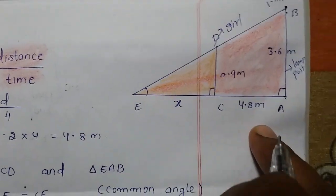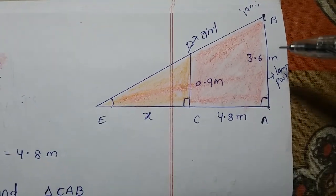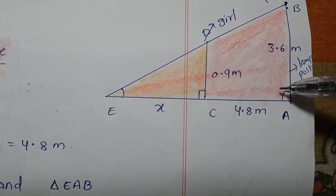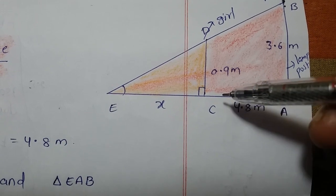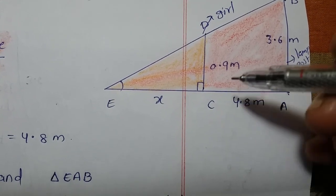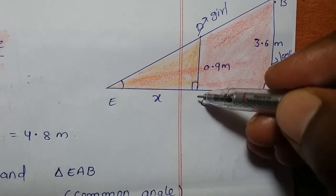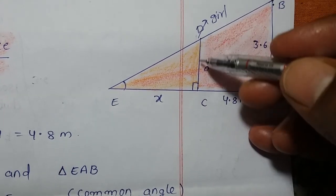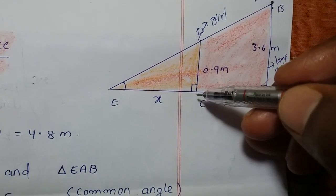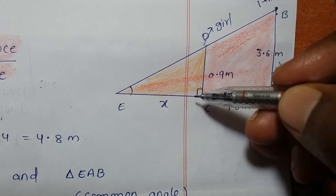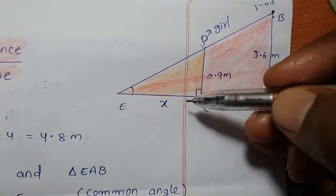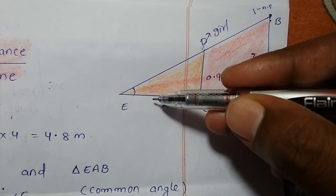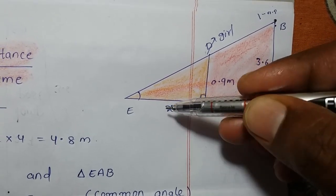Initially the girl was at the lamp post. In 4 seconds she traveled a distance of 4.8 m and came to point C. The girl is now at point C, and the length of her shadow is what we need to find — let it be x.